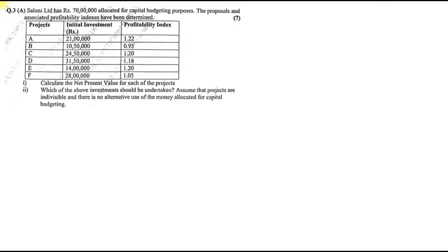Let us start with Question 3A. Slowly Limited has rupees 70 lakhs allotted for the capital budgeting process. The proposal and associated profitability index are given — so they give you initial investment and profitability index. Calculate the net present value for each project and determine which investments should be taken, assuming projects are indivisible and there is no alternative use of the allocated money.